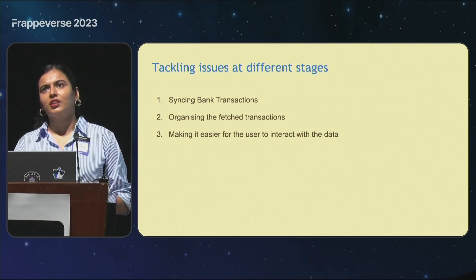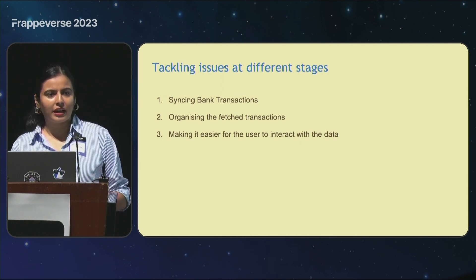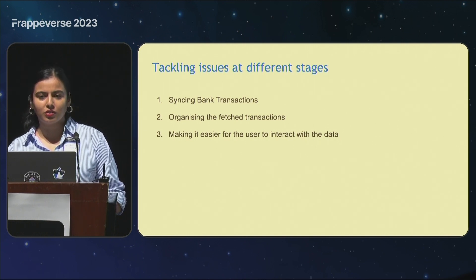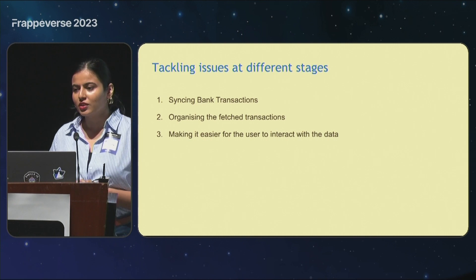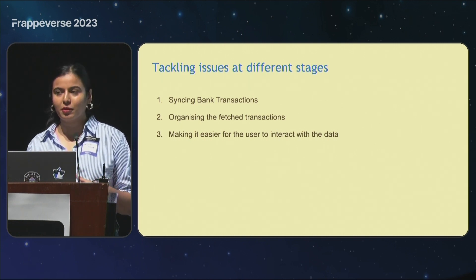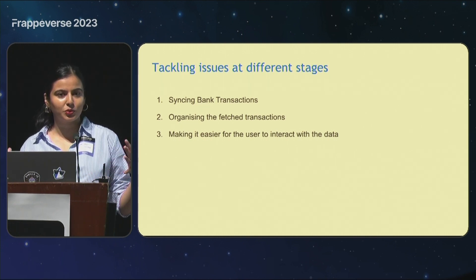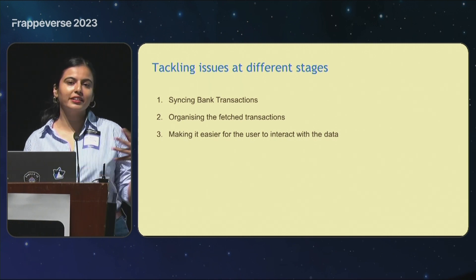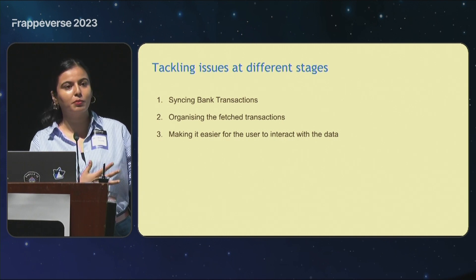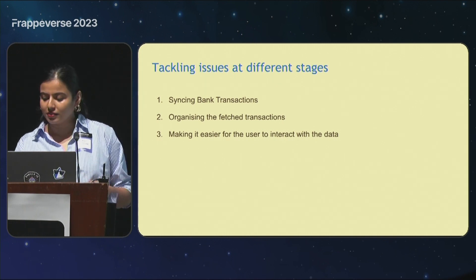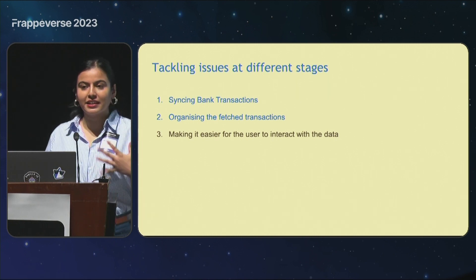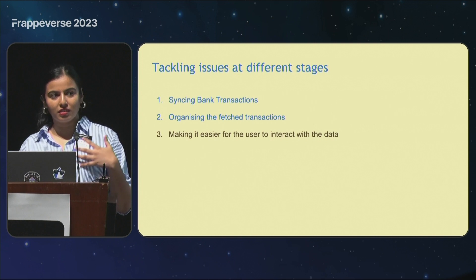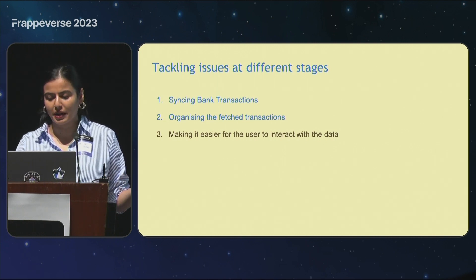We were exploring the tool and the ways to reconcile bank transactions in ERPNext, and we came across different problems. I'll break down this whole process into three major areas: the first is syncing your bank transactions — getting them from your real-world bank into the system — then making some sense out of this foreign data that you've gotten, and then letting the user interact with it and perform some actions.